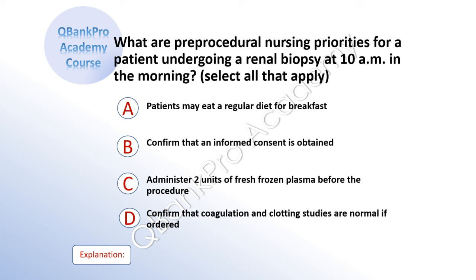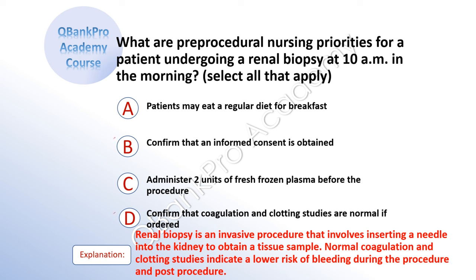What are pre-procedural nursing priorities for a patient undergoing a renal biopsy at 10 a.m.? Select all that apply. A: patients may eat a regular diet for breakfast. B: confirm that an informed consent is obtained. C: administer two units of fresh frozen plasma before the procedure. D: confirm that coagulation and clotting studies are normal if ordered. The correct answer is B: confirm that an informed consent is obtained. And D: confirm that coagulation and clotting studies are normal if ordered. Explanation: Renal biopsy is an invasive procedure that involves inserting a needle into the kidney to obtain a tissue sample. Normal coagulation and clotting studies indicate a lower risk of bleeding during and post-procedure.